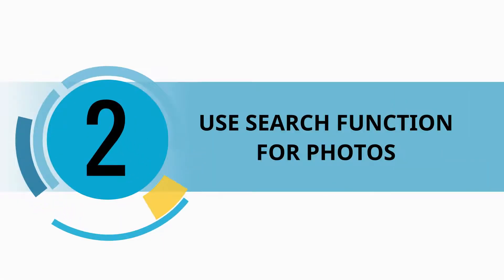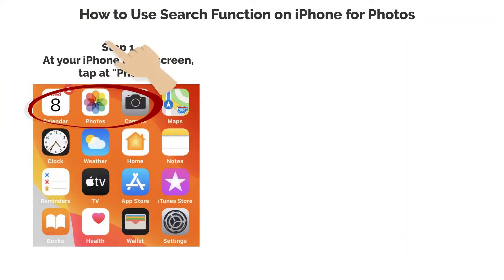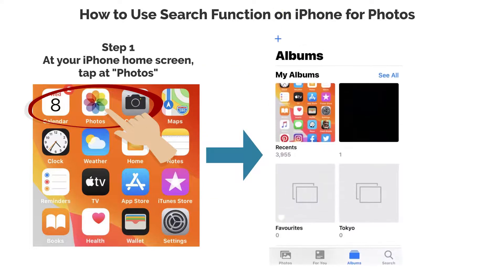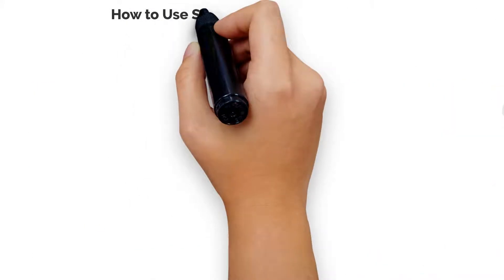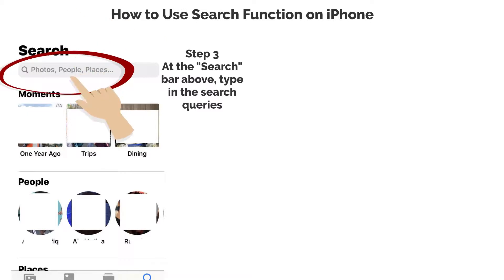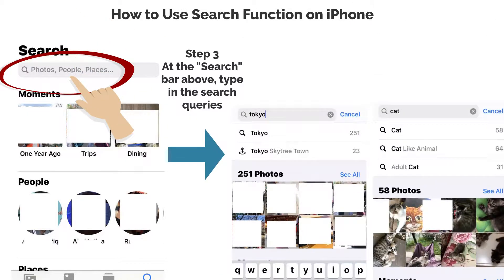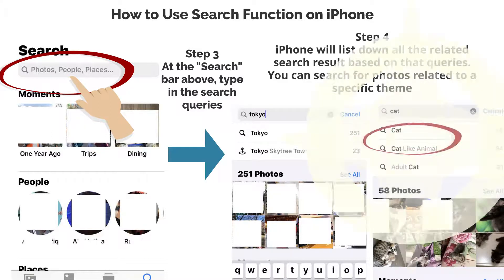Use search function for photos. Step 1: at your iPhone home screen, tap at Photos. Step 2: at Albums, tap at the search icon below. Step 3: at the search bar above, type in the search queries. Step 4: iPhone will list down all the related search results based on those queries.